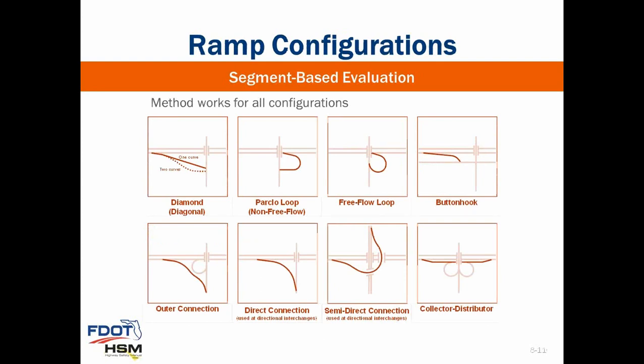The ramp predictive method works for all ramp configurations because it involves splitting the ramp into segments and separately evaluating each segment. The drawings in this slide show several common ramp configurations, including the diamond ramp, partial cloverleaf loop ramp, free flow loop ramp, button hook ramp, outer connection ramp, direct connection ramp, and semi-direct connection ramp. A collector-distributor road is also shown — it's not a ramp configuration per se, but it is a type of site addressed by the method.